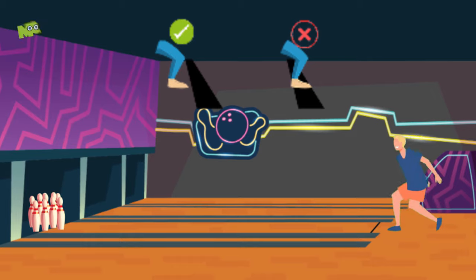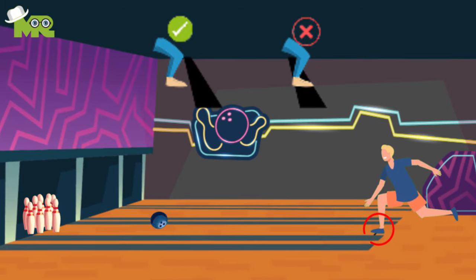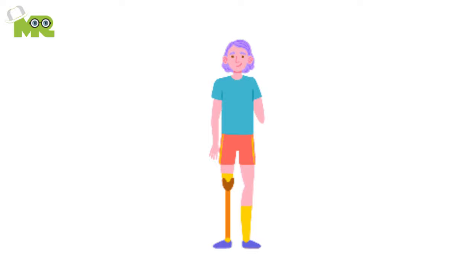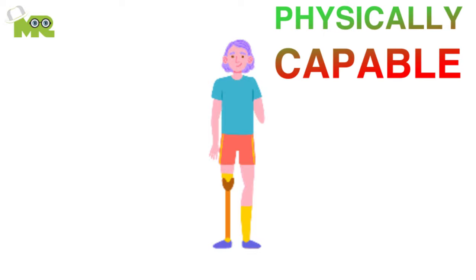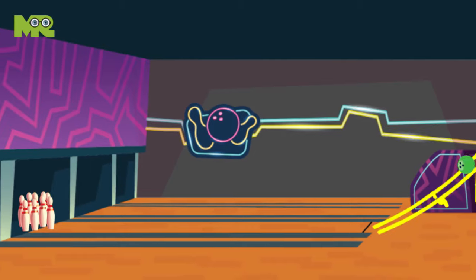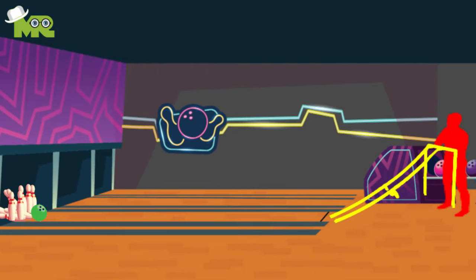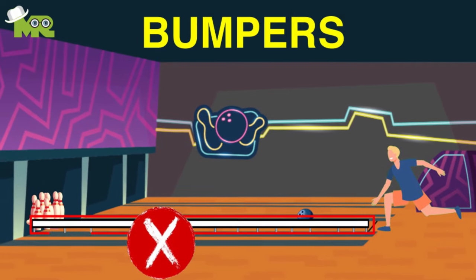If you step over the foul line, any pins knocked down will not count toward your score. If the athletes are not physically capable of rolling a bowling ball, ramp bowling is allowed. The ramp is strictly for physical disabilities and cannot be used just to improve the scores. Bumpers are not allowed while bowling professionally.